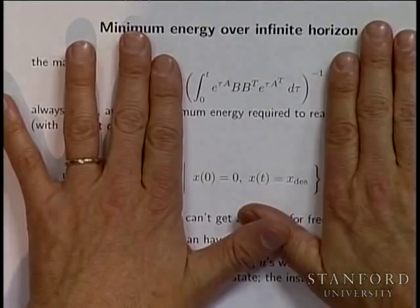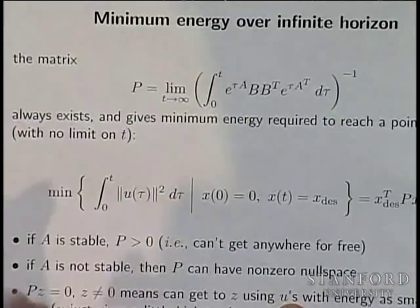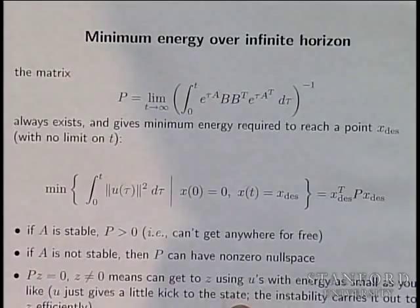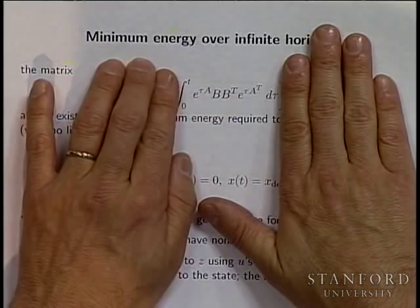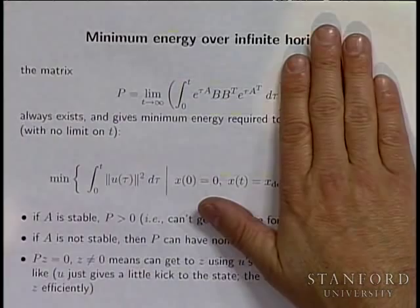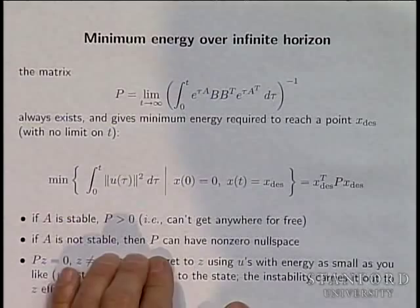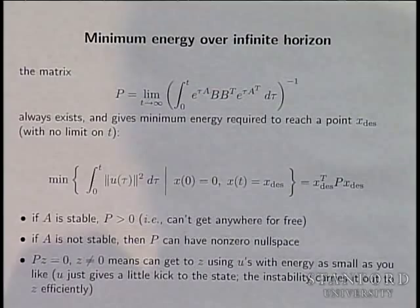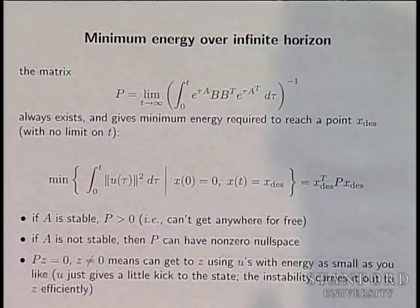When T goes to infinity, this matrix is monotone non-decreasing, so Q inverse decreases and has a limit P. If the matrix A is stable, this integral converges because e^(tau A) terms look like polynomials times decaying exponentials. P is then positive definite, meaning if a system is stable, there's no point you can reach with arbitrarily low energy — you have to fight against the dynamics pulling the state back to zero.